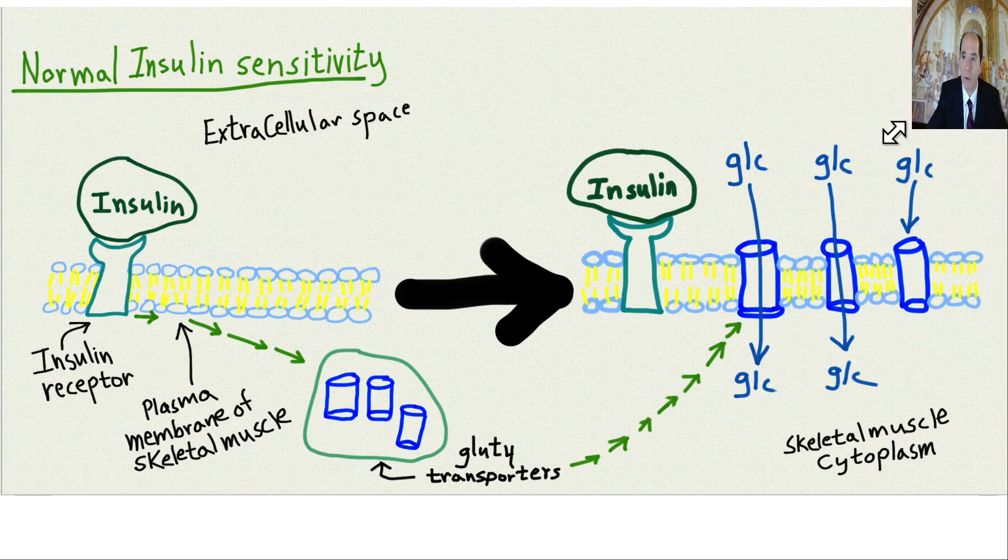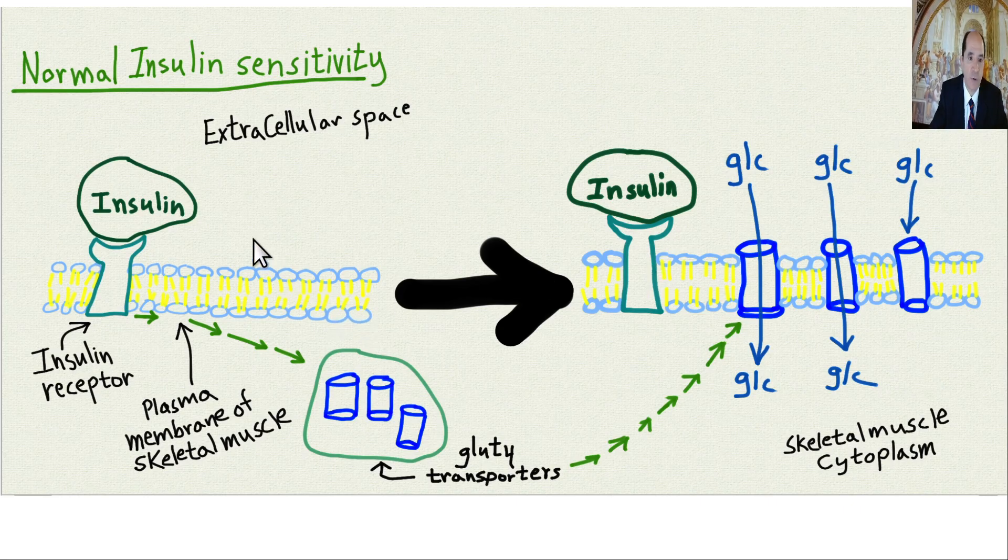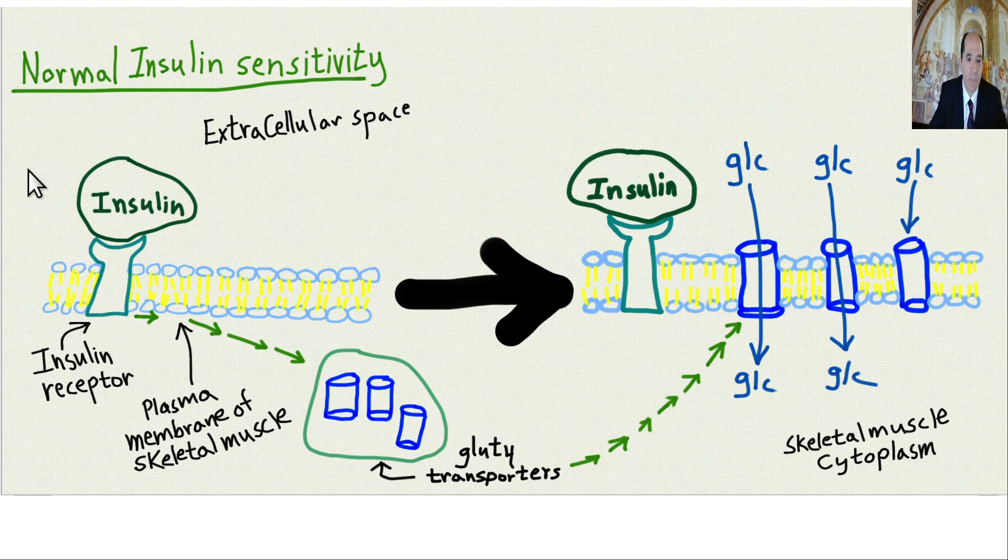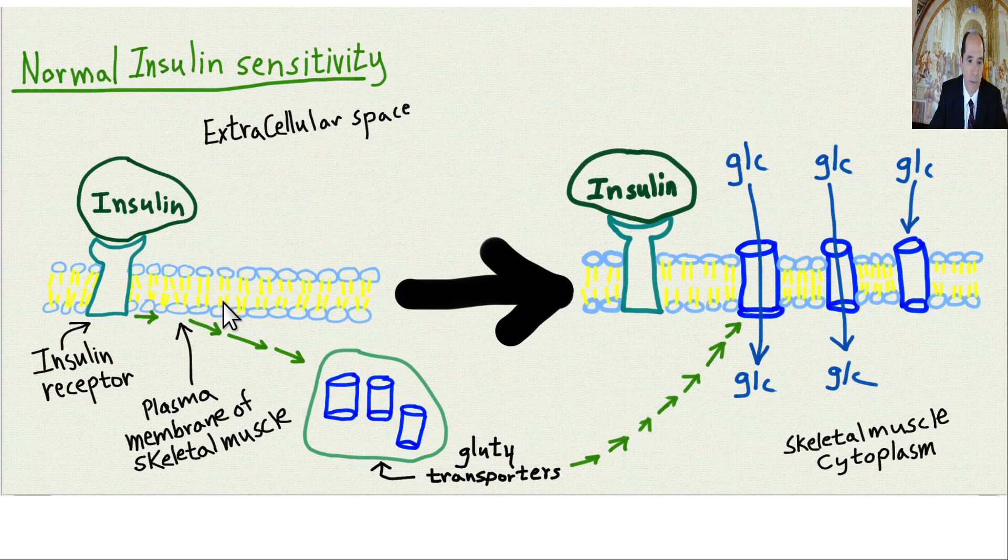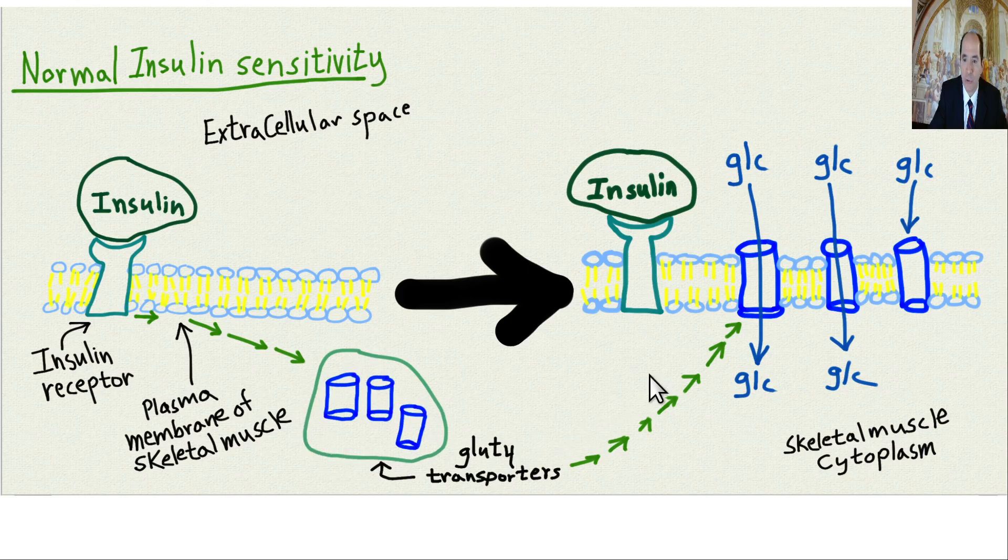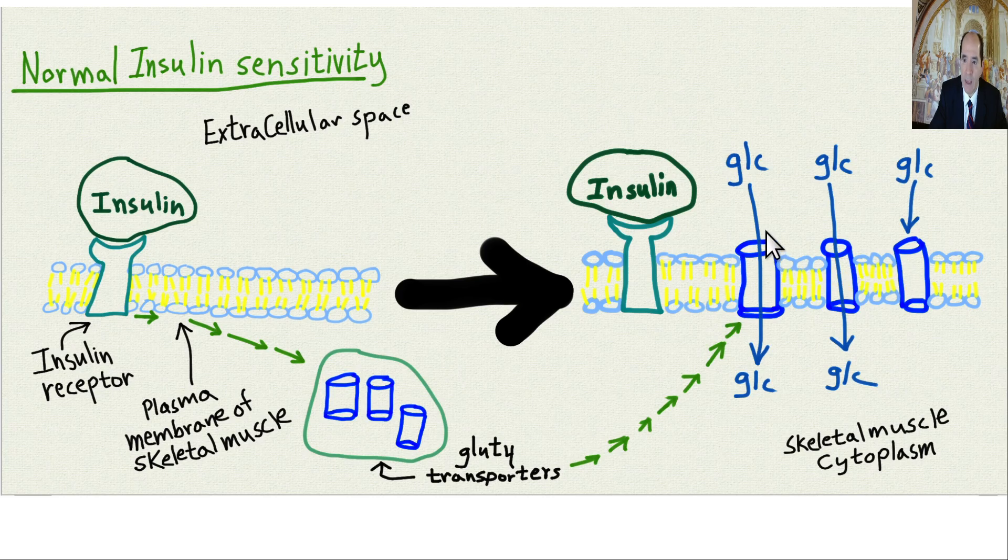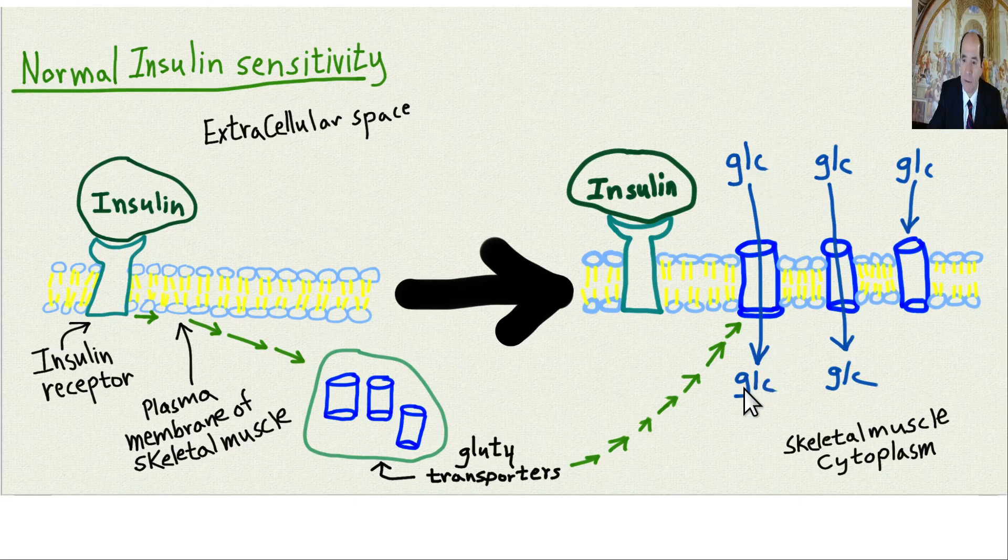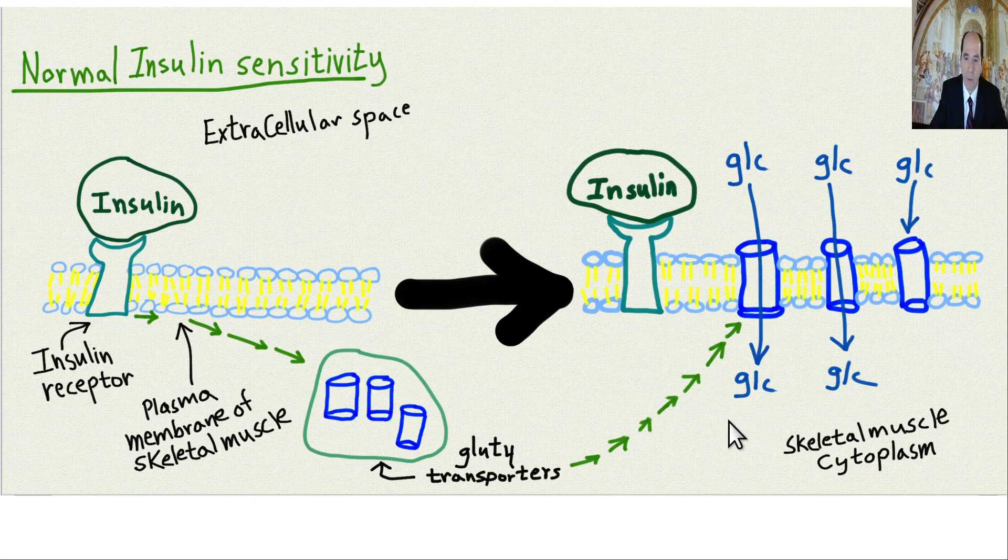So first, we're going to start out with what normal insulin function does. When blood glucose is elevated, insulin is released by the pancreas. It comes to cells like the skeletal muscle cell. The plasma membrane has an insulin receptor. It binds to the insulin receptor, sending a message that the glucose type 4 transporters, which are stored in vesicles in the cytoplasm, should travel up to the plasma membrane. They merge with the plasma membrane and form a channel to allow glucose to come into the cell. Glucose comes into the cell, it gets phosphorylated, it can run through glycolysis, for example. This is normal insulin function.